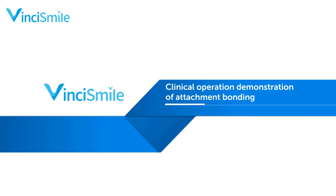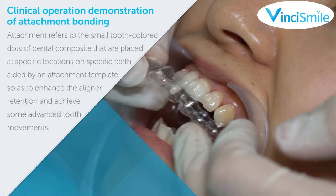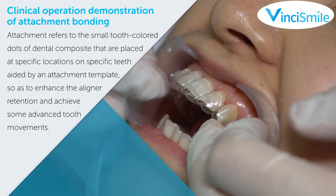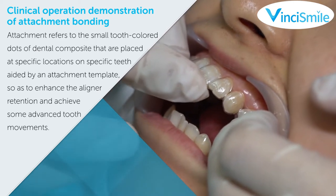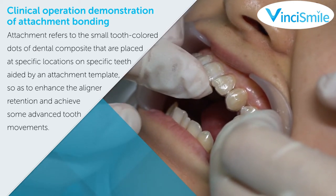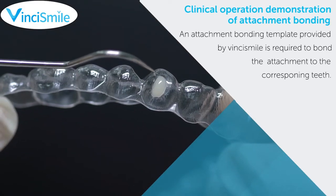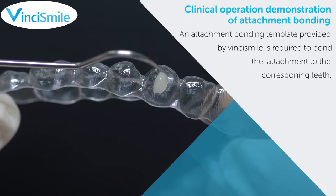Clinical operation demonstration of attachment bonding. Attachment refers to the small tooth-colored dots of dental composite that are placed at specific locations on specific teeth, aided by an attachment template, so as to enhance the aligner retention and achieve some advanced tooth movement.